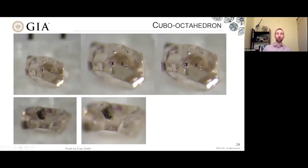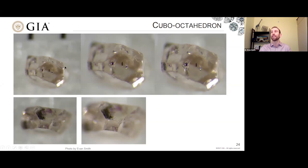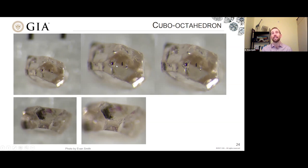Beyond the octahedron, we also talked about some cube faces. These tend not to be very well pronounced — most octahedrons don't have any kind of modification into cube faces, but this particular one does. This is the only great example I've seen personally. This is an octahedral diamond with these little tiny square faces that look actually pretty sharp, and I would describe this shape as cubo-octahedral. You tend to see this a lot more commonly in lab-grown diamonds made by the high pressure, high temperature synthesis method. In nature, cubo-octahedral diamonds are more rare.